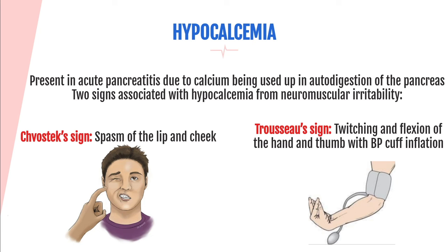Hypocalcemia is present in acute pancreatitis because calcium is used up for autodigestion. There are two signs associated with hypocalcemia causing neuromuscular irritability. Chvostek's sign is seen when gently tapping on the outer cheek — you'll see twitching or spasm of the facial muscles, including the lip and cheek. Trousseau's sign is twitching and flexion of the hand and thumb when the blood pressure cuff is inflated. Both are due to neuromuscular irritability caused by low calcium levels.